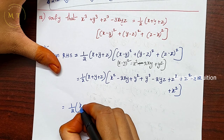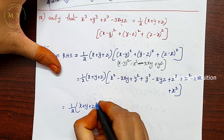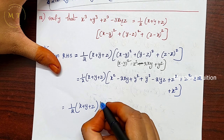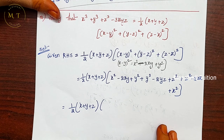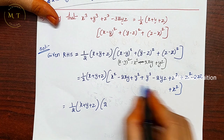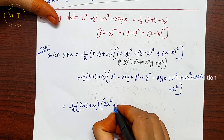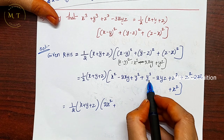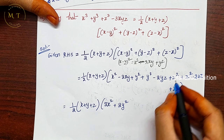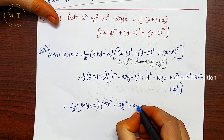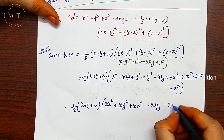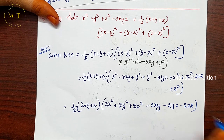Collecting like terms inside the bracket: 2x² + 2y² + 2z² - 2xy - 2yz - 2zx. With the ½ factor, this cancels to give x² + y² + z² - xy - yz - zx, confirming both forms of the identity match.